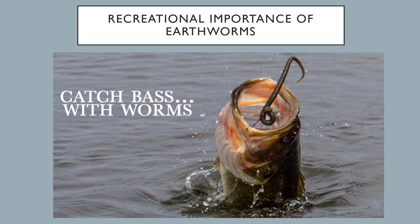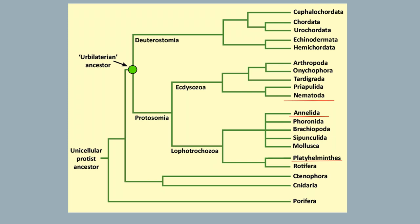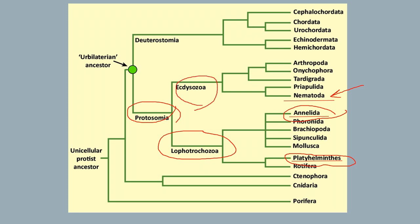Keeping everything together: we're still in protostomes and we've covered phylum Platyhelminthes — our flatworms — and Annelida — our segmented worms. Now we're moving to a different kind of worm: nematodes, our roundworms. They are still protostomes, but they've branched off separately and are no longer in the Lophotrochozoa group.